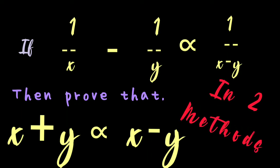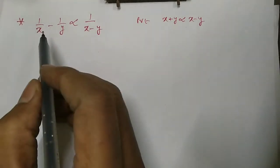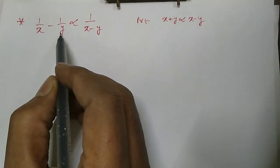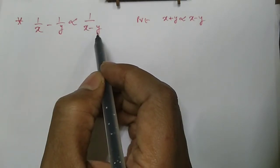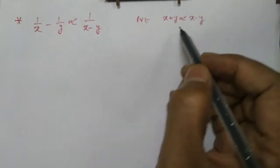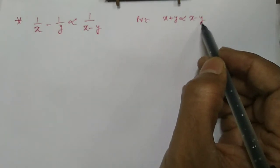If 1/x minus 1/y varies as 1/(x minus y), then prove that x plus y varies as x minus y. So we have 1/x minus 1/y proportional to 1/(x minus y), and we need to show that x plus y is proportional to x minus y.